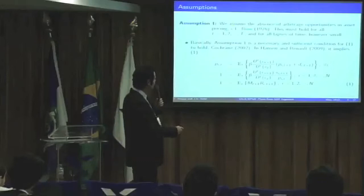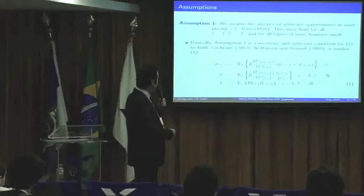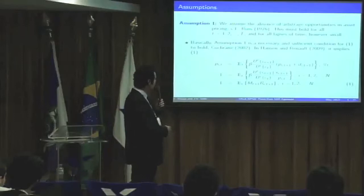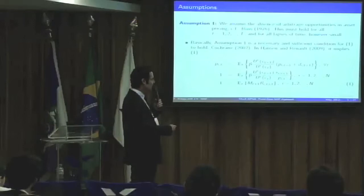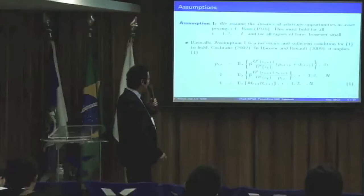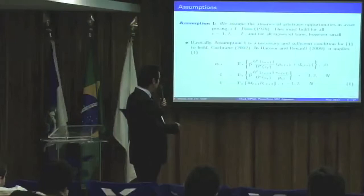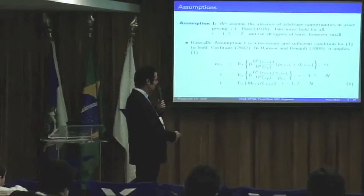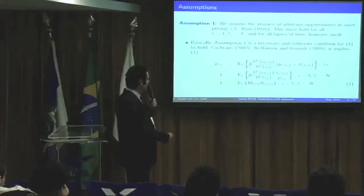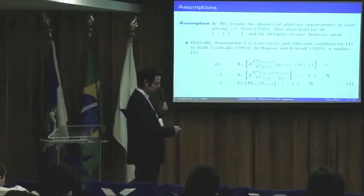We have two assumptions. First is no-arbitrage. The asset pricing equation says the price of an asset today equals how much it pays off tomorrow discounted in expectation given prior information. Working with returns rather than prices and payoffs: the price of returns tomorrow costs today just one—holding for every asset in the economy. Since all assets are discounted by the same M, that's why M is common.